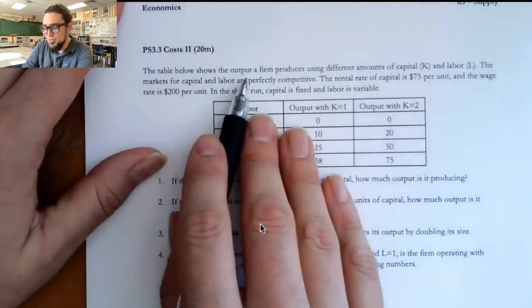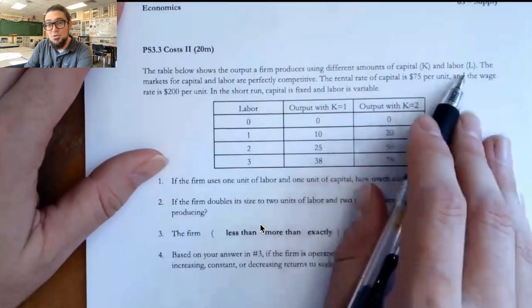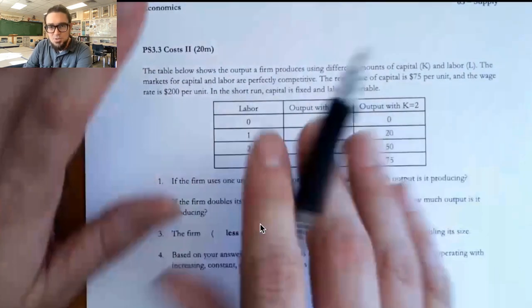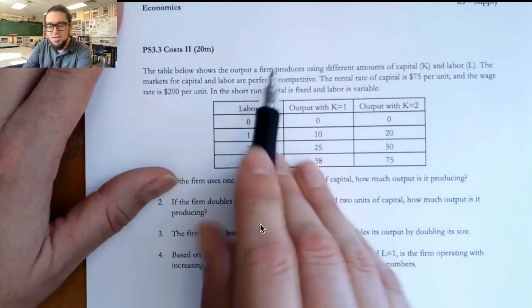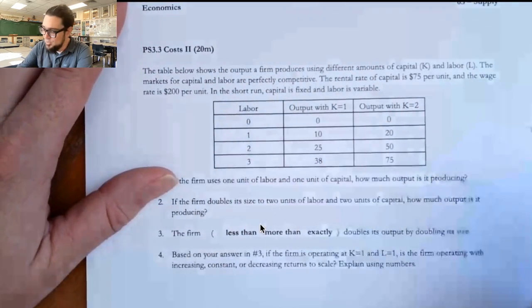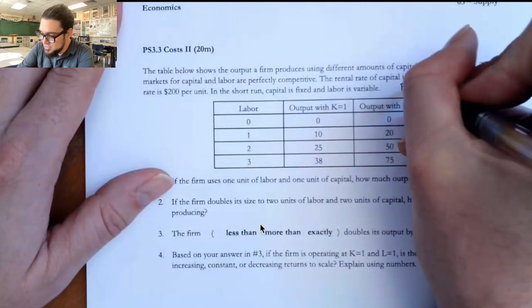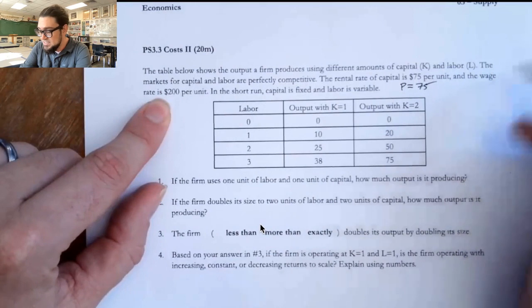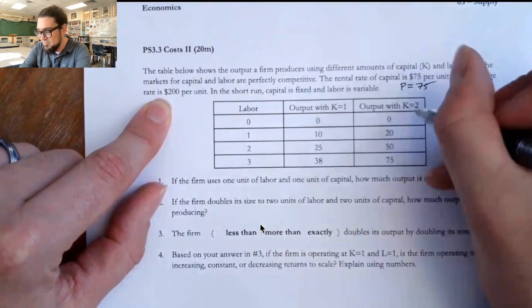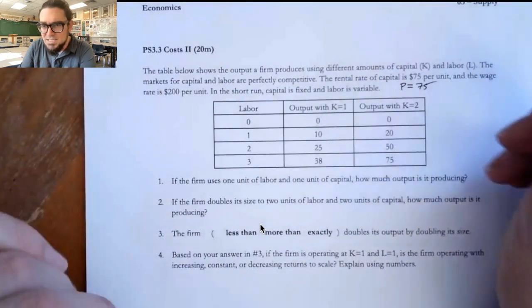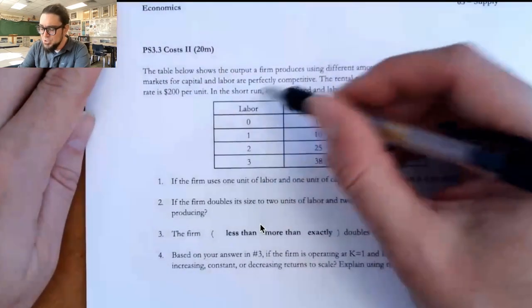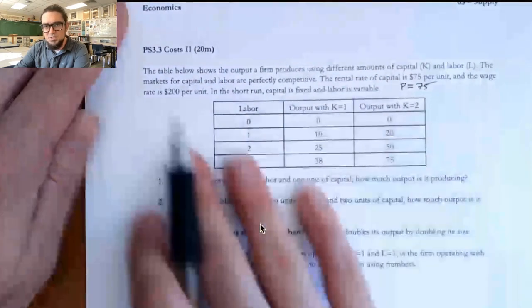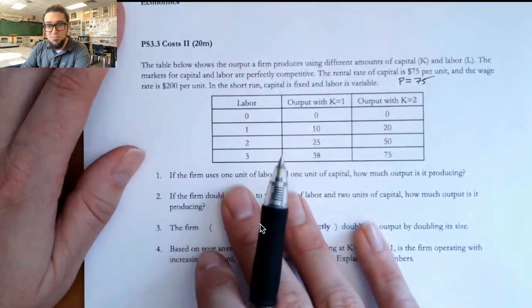So the table below shows the output a firm produces using different amounts of capital and labor. The markets for capital and labor are perfectly competitive. They have to tell you that or else you can get different answers. The rental rate of capital is $75 per unit. That just means the price is $75. And the wage rate is $200 per unit. That's like the price of the workers. In the short run, capital is fixed and labor is variable.